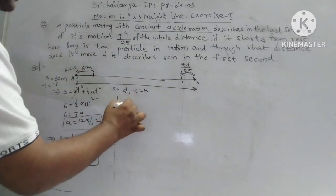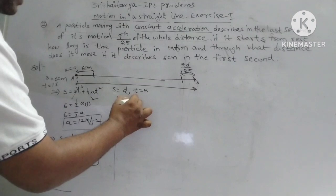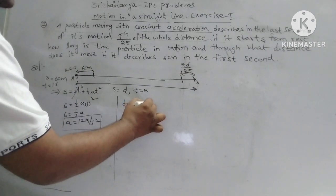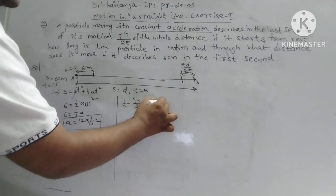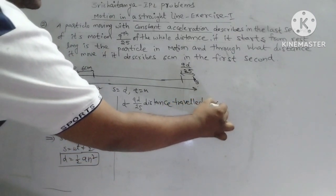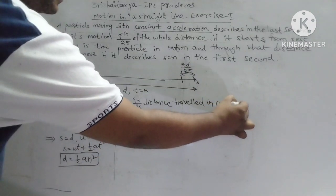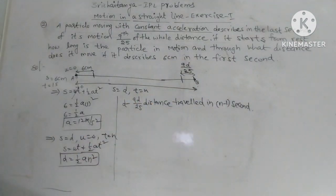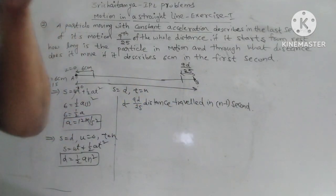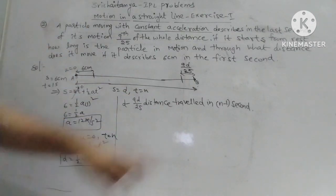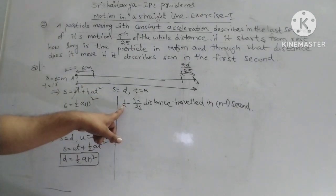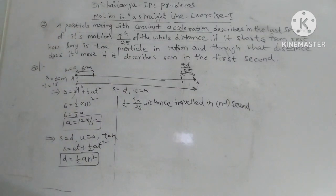The total distance is D, and 9D/25 is the distance in the last second. The remaining distance — D minus 9D/25 — is the distance traveled in N minus 1 seconds. In N minus 1 seconds, the particle covers D minus 9D/25.